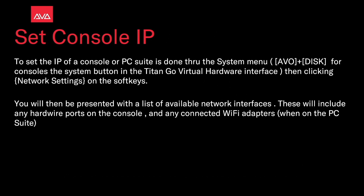To set the IP of a console or the PC suite, go to the system menu — Avel Plus Disk for consoles, the system button and the Titan Go Virtual Hardware Interface — then click Network Settings on the soft keys.